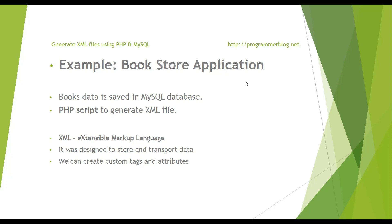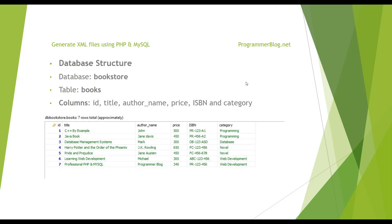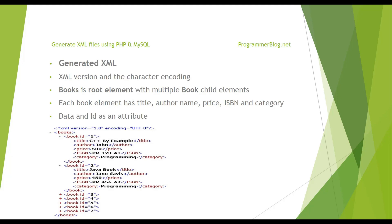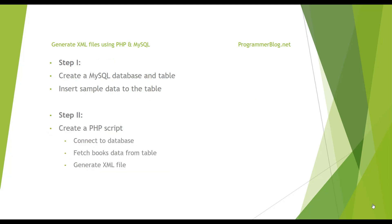Here we have a books table inside the bookstore database, and this table has id, title, author_name, price, isbn, and category of the book, with some sample data already inserted. In the first line of the XML document, the XML variant and encoding type is defined. Next is the books root element, and inside it there are multiple book child elements with title, author, price, isbn, and category as child elements of each book item.